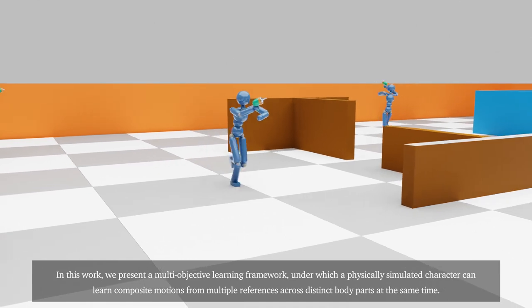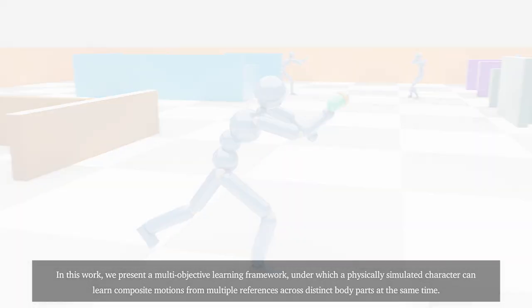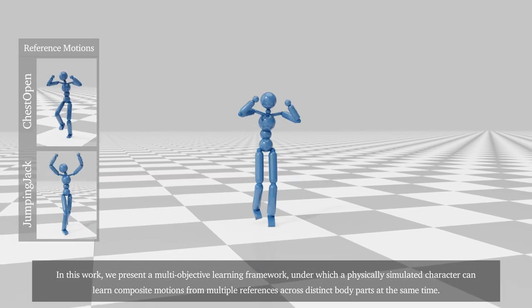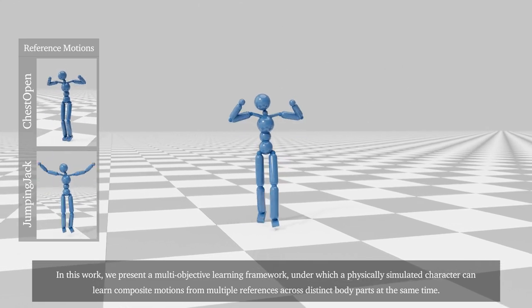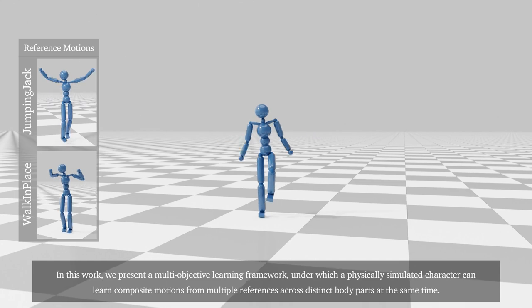In this work, we present a multi-objective learning framework under which a physically simulated character can learn composite motions from multiple references across distinct body parts at the same time.